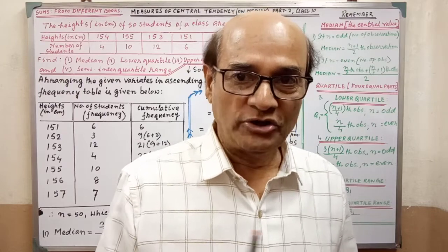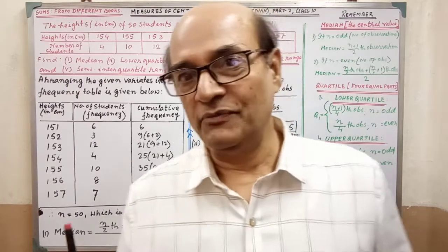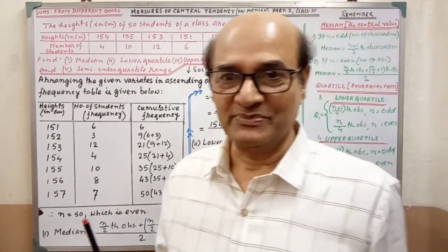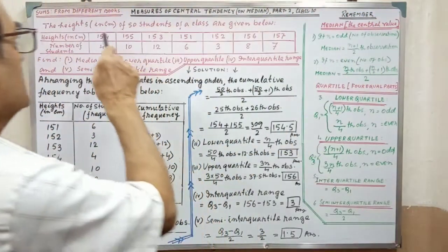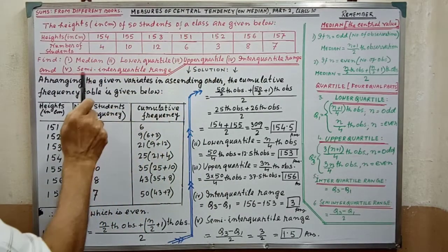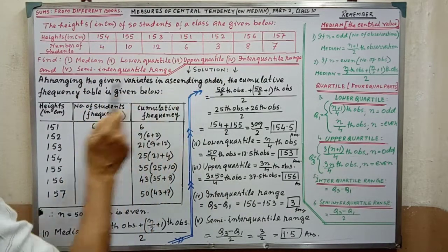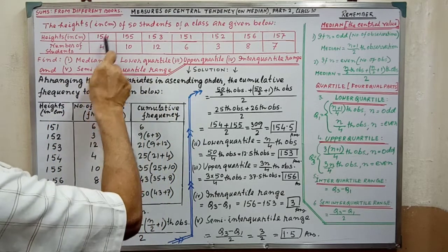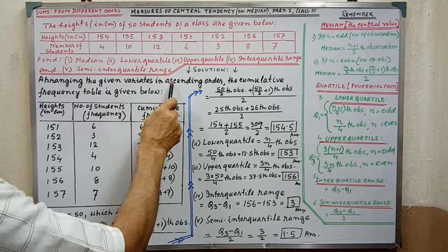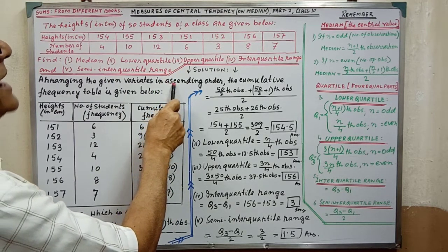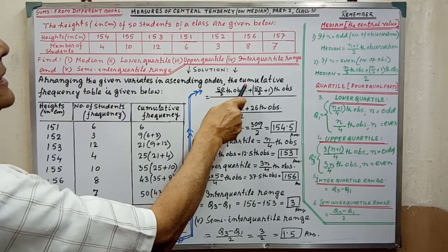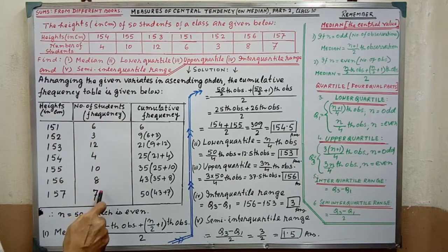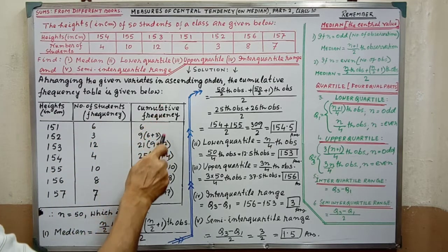On this one sum — if you understand one sum, then any sum in this chapter you can do yourself. Please pay your attention on the board; the sum is written here clearly. The solution begins by arranging the given variates in ascending order. Then we make a cumulative frequency table with columns: height, number of students (frequency), and cumulative frequency.